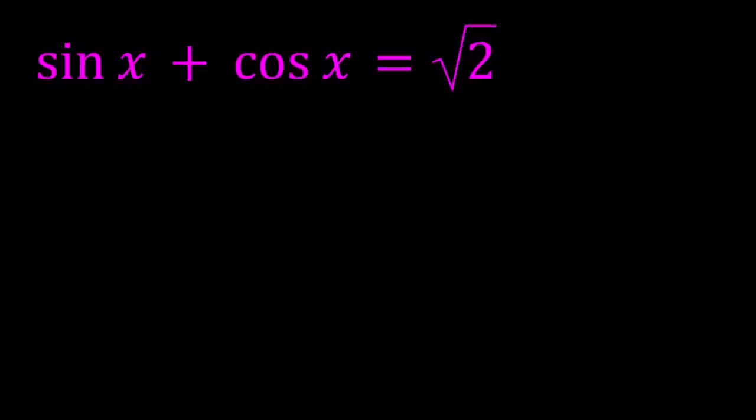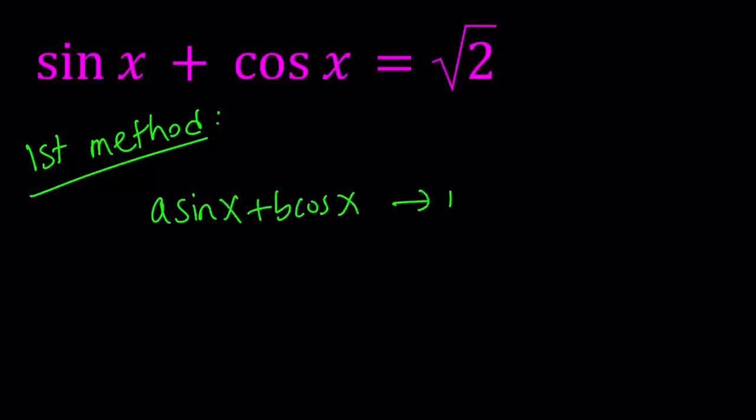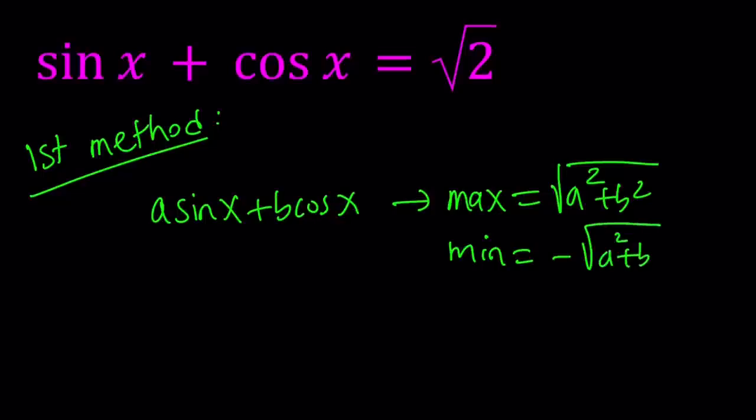I'll be presenting two methods and let's start with the first one. So for my first method, if you study trigonometry and know about maximum or minimum of a function you've probably seen something like this: a sine x plus b cosine x. The maximum value for this function is square root of a squared plus b squared and the minimum is the opposite of this. So it's always going to take values between those two numbers.